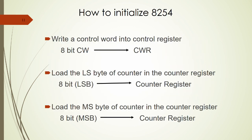To initialize the 8254, first load the 8-bit control word into the control word register. Next, load the least significant byte of the counter value into the counter register. The third step — loading the most significant byte into the counter register — is optional and only required when a full 16-bit count is needed. Before writing an initialization program, we must understand the operating modes of 8254.